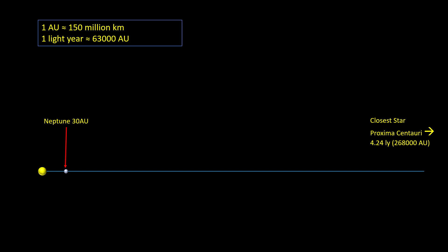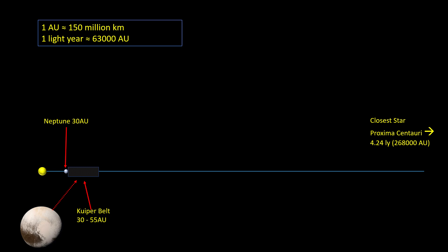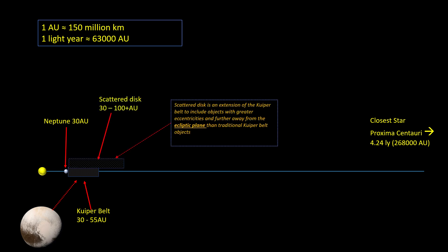Let's look at the outer solar system. Neptune is the most distant planet from the Sun. Beyond Neptune is the Kuiper belt, small icy objects. The best known of these is the dwarf planet Pluto. The scattered disk is an extension of the Kuiper belt, and includes objects with greater eccentricities, meaning more elliptical orbits, and also further away from the ecliptic plane — the plane in which the Earth orbits the Sun — than the traditional Kuiper belt objects.